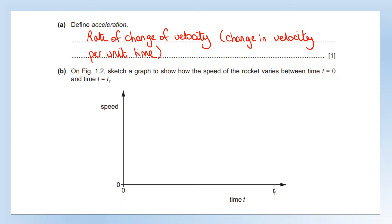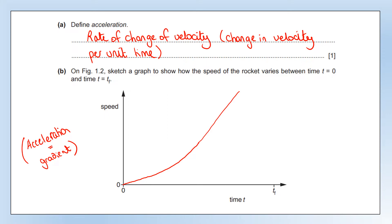On the diagram, we want to sketch a graph to show how the speed of the rocket varies between time equals zero and time equals tf. The thing to remember with a speed-time graph, or a velocity-time graph, is that acceleration is the gradient. In this first section the acceleration was increasing, and then the acceleration is constant. So we should have an increasing gradient showing increasing acceleration, and then we should have a constant gradient, or a straight line graph. That's our speed-time graph.